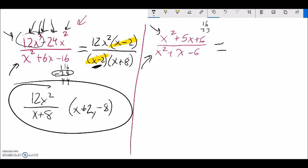These are the ones that add to 5. So this factors to x plus 2 times x plus 3.